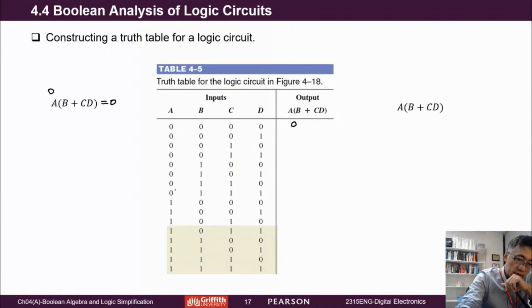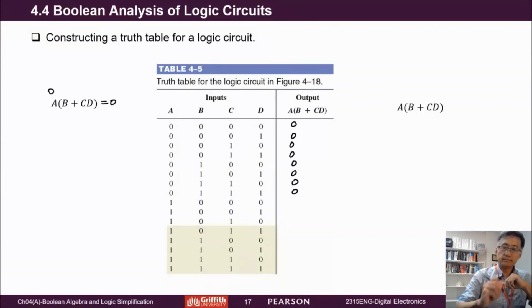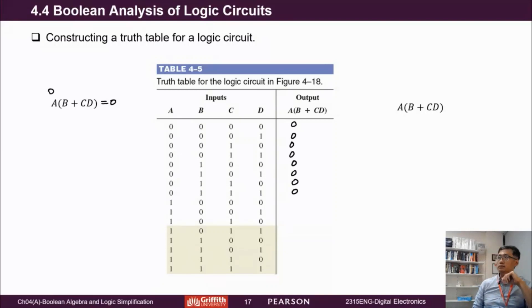So we have zeros — we just put zeros up to there and we finish half of the truth table quickly. When A equals zero, the output will be zero for all eight rows.